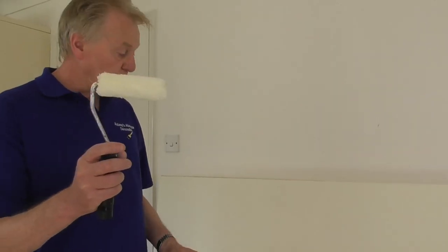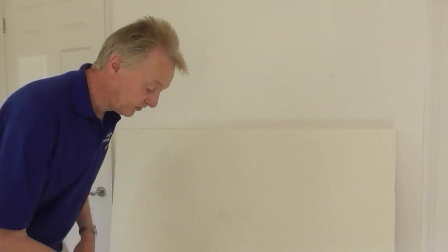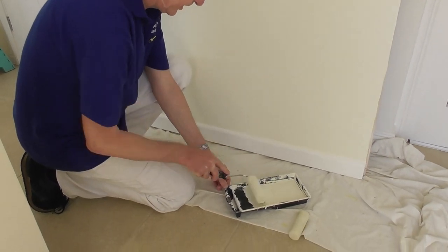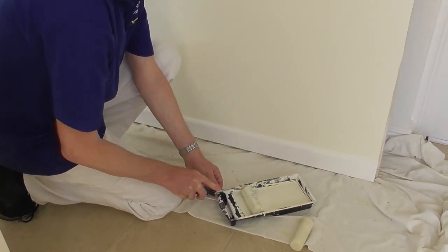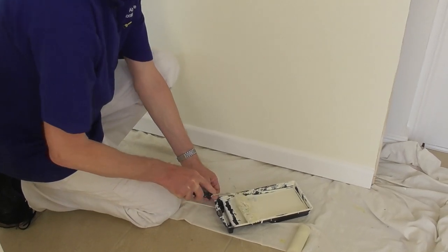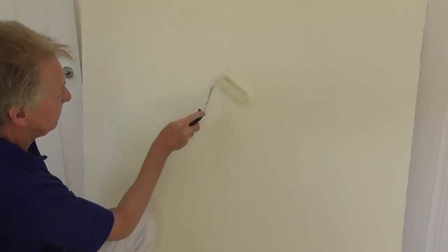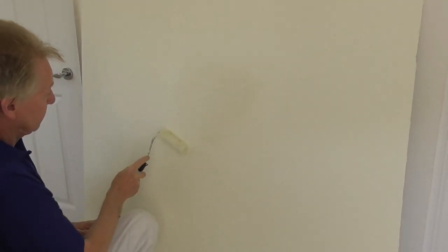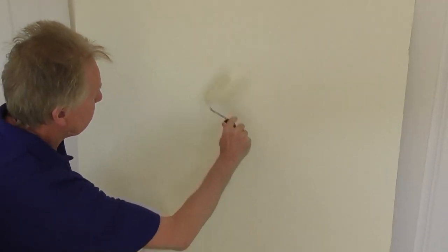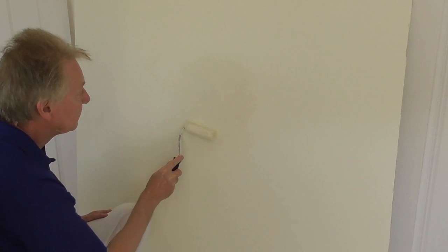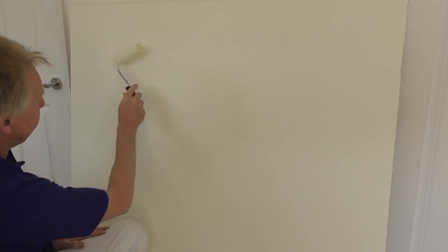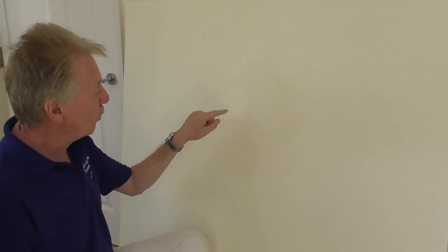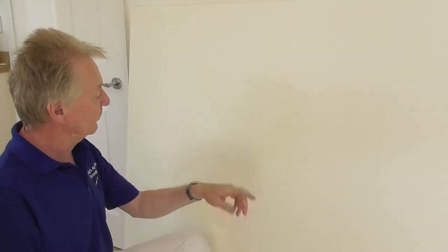So I've already put some matte emulsion in the little tray here. Just load them up with a bit of the paint. Like that. Work in the center outwards. And just lay it off like that to smooth it out of the edges. That's that done. I'll let it dry. Then I'm going to give it one more coat of paint. Then we'll check it out what it looks like when I've finished.